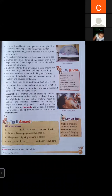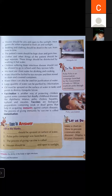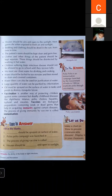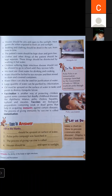Houses should be airy and open to sunlight. Most germs — bacteria and viruses — get killed when exposed to fresh air and sunlight. When they get fresh air and sunlight, most germs will die. Bedding and clothing should also be dried in the sun from time to time — bed covers, pillows, and pillow covers must be dried in the sun regularly.